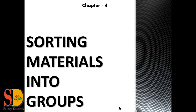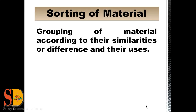Hello friends, welcome to our YouTube channel Study Dreams. We start our video with the fourth chapter of class science book, and that is Sorting Material into Groups. Definition of sorting of material: sorting of material means the grouping of material according to their similarities or differences as well as their uses.